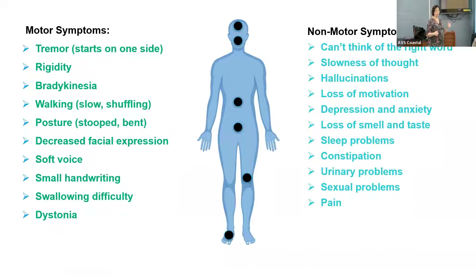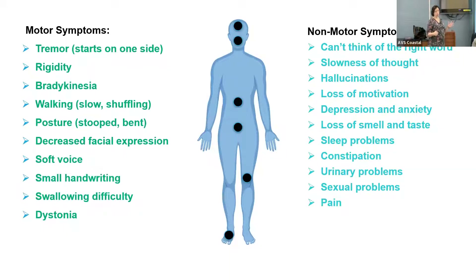Hallucinations are something people are always worried about, especially because of certain commercials. But this can be a symptom that occurs late in the disease process, and oftentimes they're not really bothersome to the patient. People will see things like a cat or a loved one, but it's not like schizophrenia where you're afraid or paranoid — that mostly doesn't happen. Loss of motivation is really common, and that's another thing that happens because of the loss of dopamine, which is important for motivational behavior.